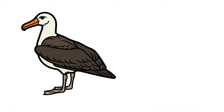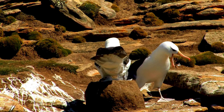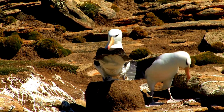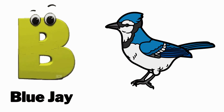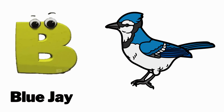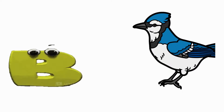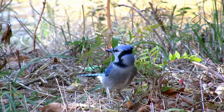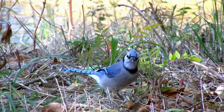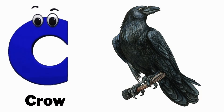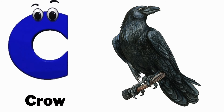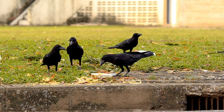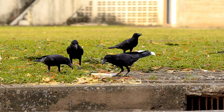A is for albatross, ah ah albatross. B is for blue jay, buh buh blue jay. C is for crow, kuh kuh crow.